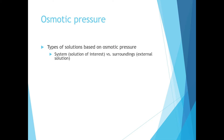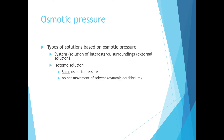Based on osmotic pressure, we can classify solutions into three types by comparing our system to the surroundings outside the semipermeable membrane. A solution is isotonic if the osmotic pressure inside and outside are the same. As a result of equal osmotic pressure and equal concentration on both sides, there is no net movement of solvent — water will still pass from one side to the other, but there will be no measurable difference on the two sides of the membrane.